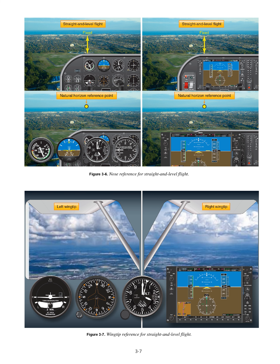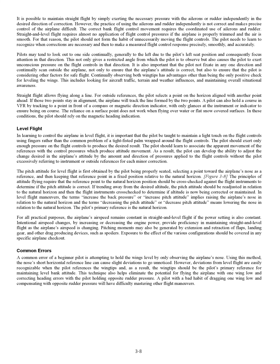It is possible to maintain straight flight by simply exerting the necessary pressure with the ailerons or rudder independently in the desired direction of correction. However, the practice of using the ailerons and rudder independently is not correct and makes precise control of the airplane difficult. The correct bank flight control movement requires the coordinated use of ailerons and rudder. Straight and level flight requires almost no application of flight control pressures if the airplane is properly trimmed and the air is smooth. The pilot should not form the habit of unnecessarily moving the flight controls. The pilot needs to learn to recognize when corrections are necessary and then to make a measured flight control response precisely, smoothly, and accurately.